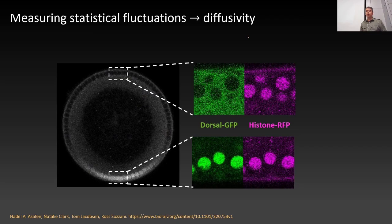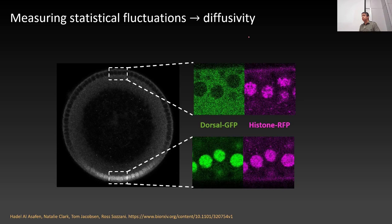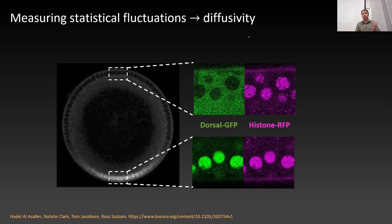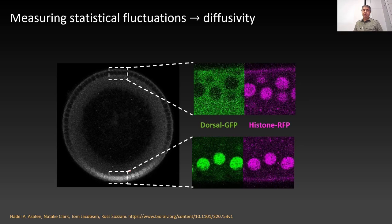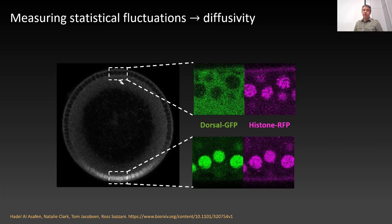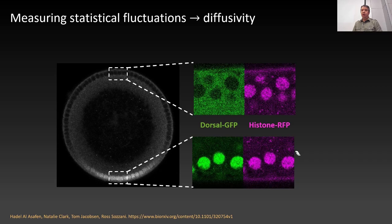One of the ways we can do this is by using statistical fluctuations to measure the mobility of dorsal in my live tissue — in the embryo, in the cell, or in the nucleus. These videos on the screen show two views: one focusing on the ventral side and one on the dorsal side.